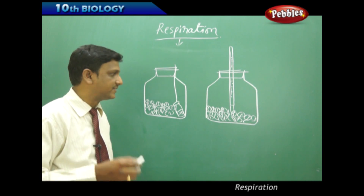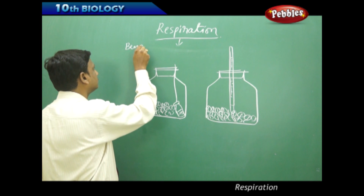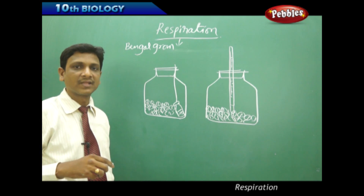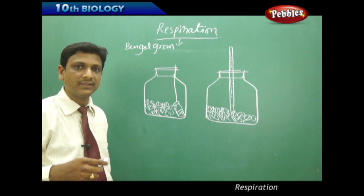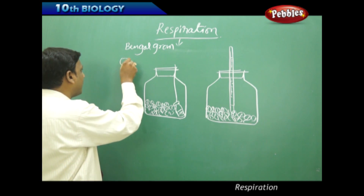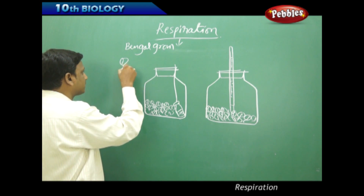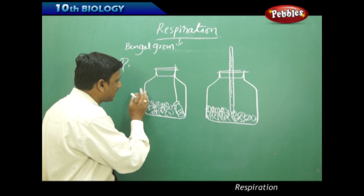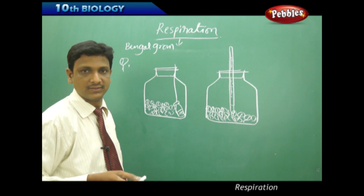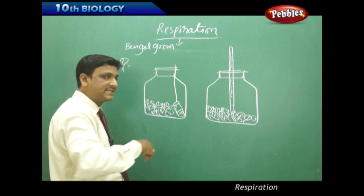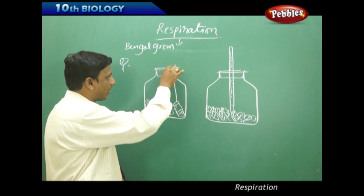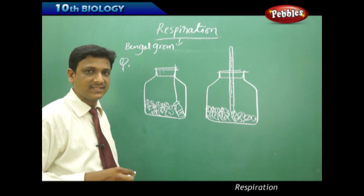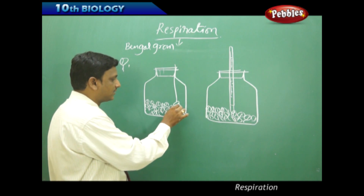We can take Bengal gram seeds, soak them and tie them in a wet cloth, keep it aside for one day, and you will find the Bengal gram develops small sprouts. These sprouted seeds are equal to small plants. Take a wide-mouthed glass or plastic bottle, put the seeds inside, and close it with a cork.